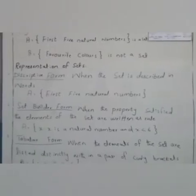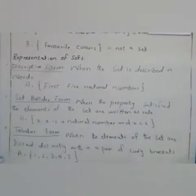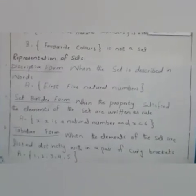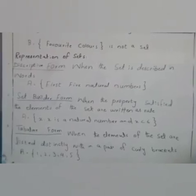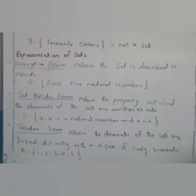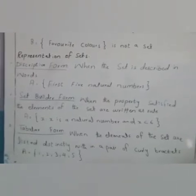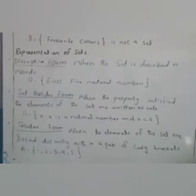Now, come to the next. How is a set represented? A set can be represented in 3 forms. Number 1, descriptive form. Number 2, set builder form. And number 3, tabular form. Descriptive form, when the set is described in words. For example, A is equal to first 5 natural numbers.